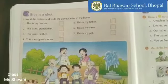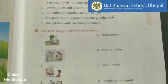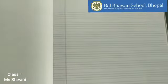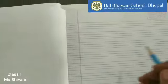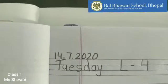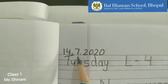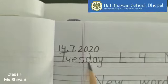Hello children. I hope you all have completed the exercises in the book. Now we are going to write some new words in the copy. Open your EBS copy. On a new page, first write down today's date. Today's date is 14/7 and the year is 2020 and the day is Tuesday.